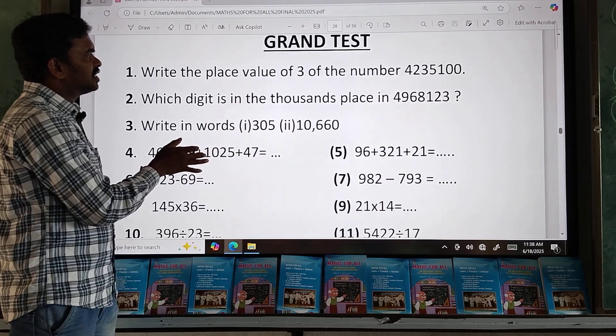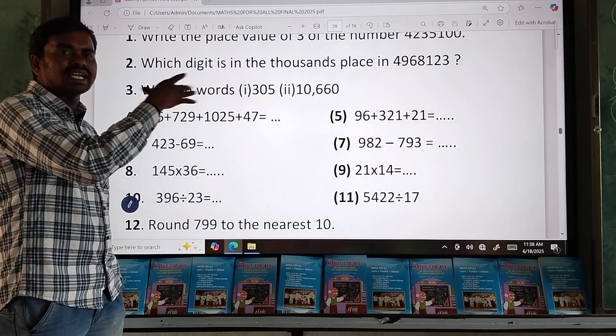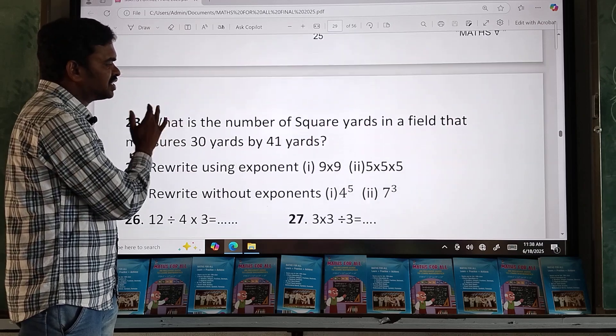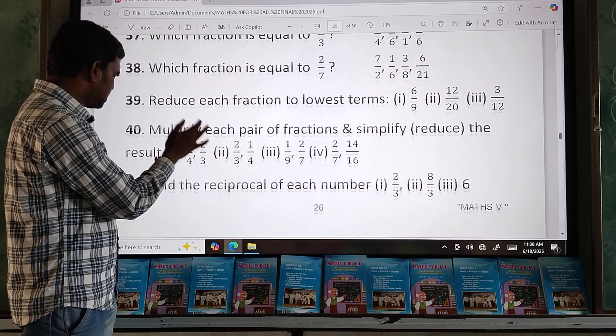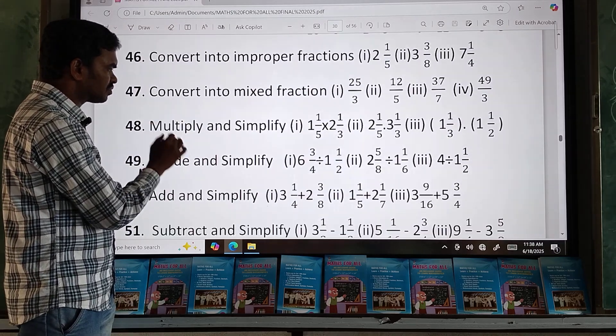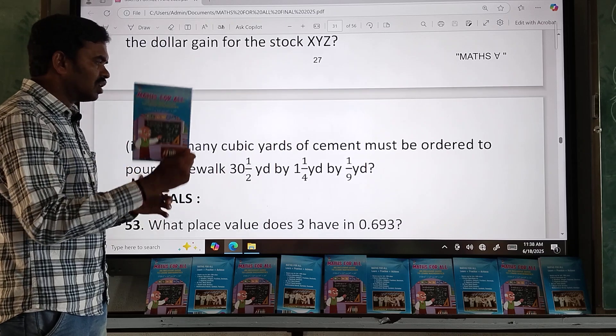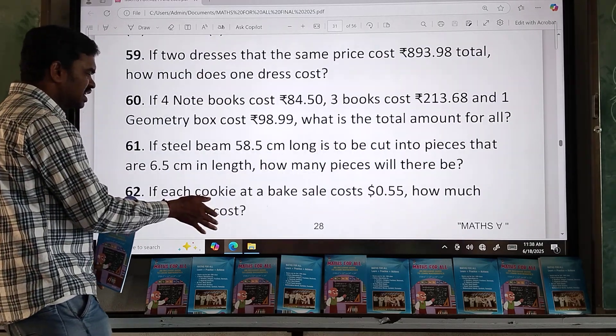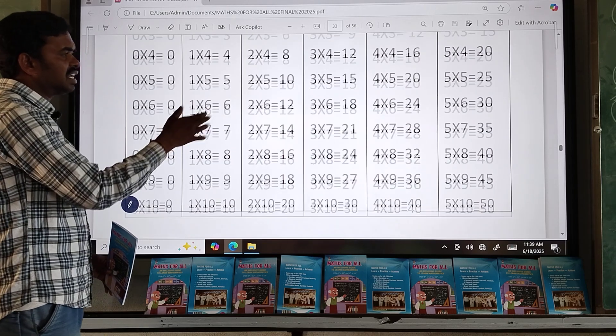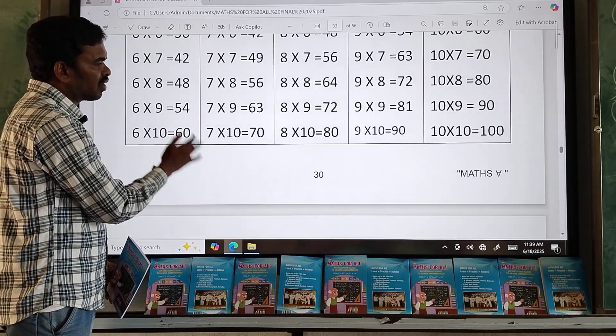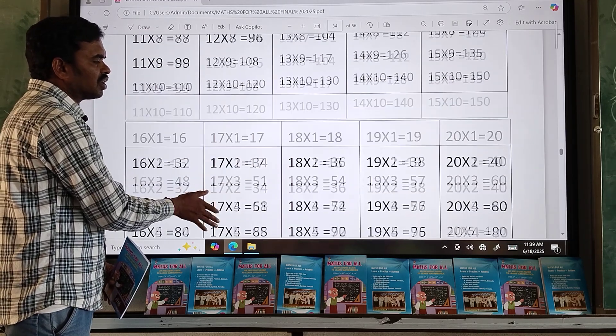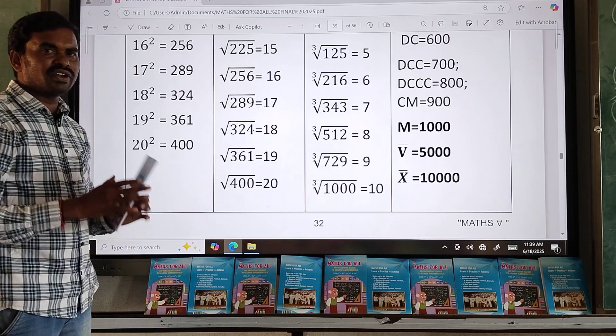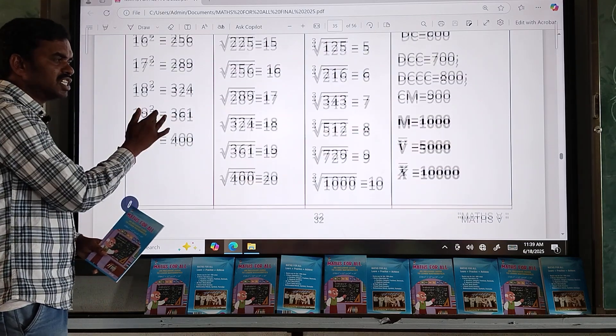Grand test. So till now, whatever concepts we have learned on all the categories, one grand test is also conducted for you. You can write the grand test and you can check the answers. After completing this grand test, I have given answers. After grand test, tables. 20 tables are there. Here I included 0 table also. After tables: squares and square roots, cubes and cube roots, Roman numbers. Even for your table book, it costs 10 to 20 rupees, but here in this book, tables are also included.